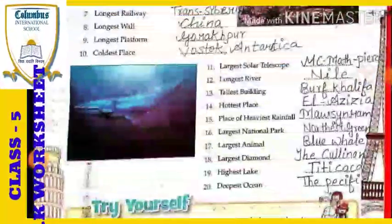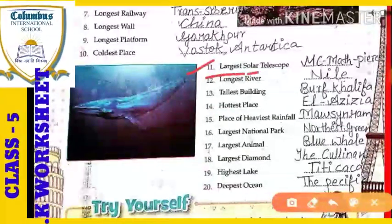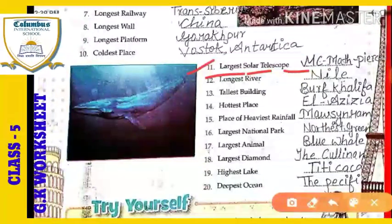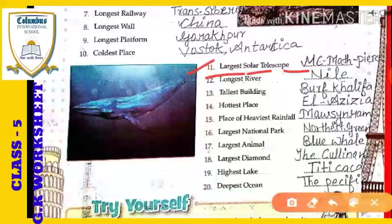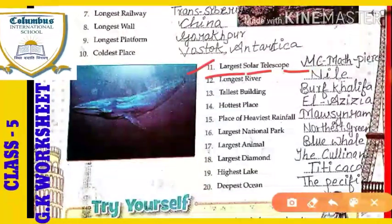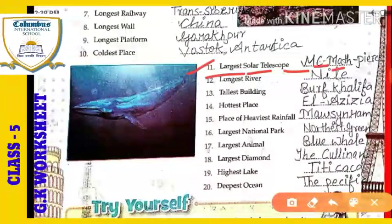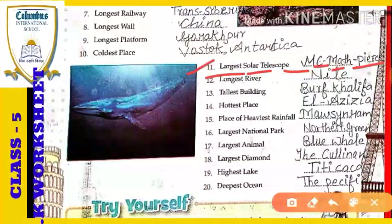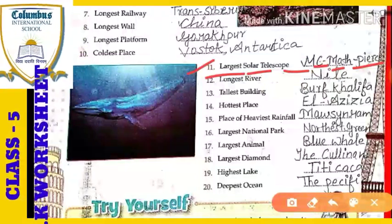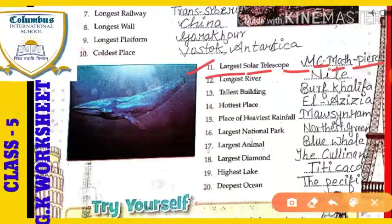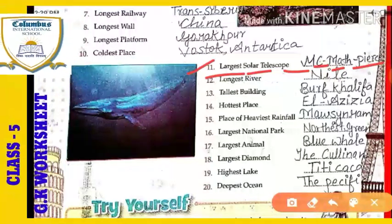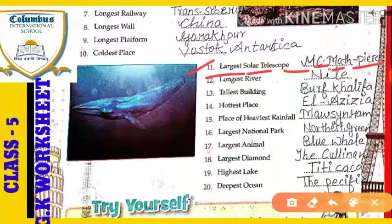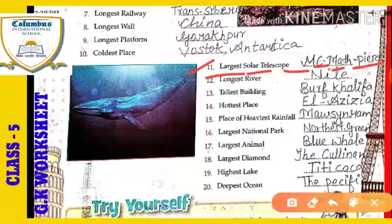Now let's come to number 11: the largest solar telescope. Which is the largest solar telescope? That is the McMath-Pierce Solar Telescope, which is located in the USA. The largest solar telescope is the McMath-Pierce Solar Telescope, situated in the USA.